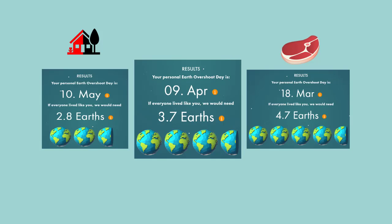In summary of the scenarios that I've shown you, the scenario that lowered my ecological footprint the most was downsizing my house to one that's half the size of what I currently live in, and the scenario that increased my footprint the most was starting to eat meat a few times a week.